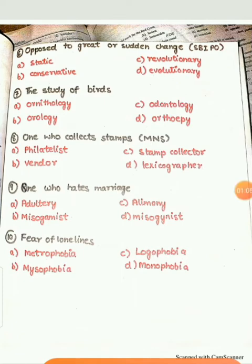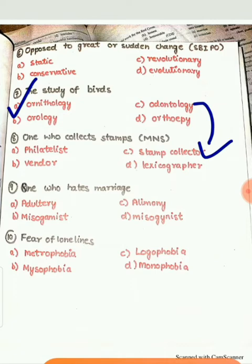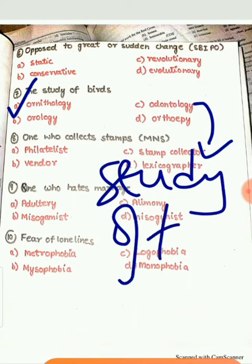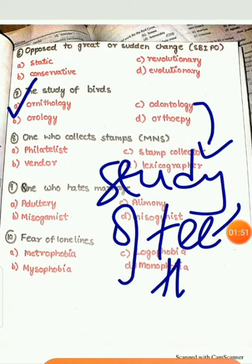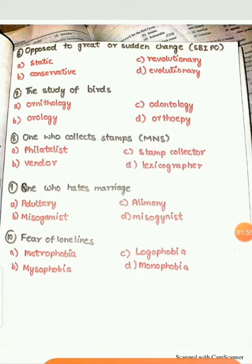Our seventh question is: The study of birds is known as — A. Ornithology, B. Orology, C. Odontology, or D. Orthoephy. The correct answer is A. Ornithology. Odontology: 'odonto' means teeth and '-logy' means study, so it means study of teeth. Orology means study of mountains. Orthoephy means study of correct pronunciation.